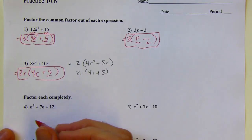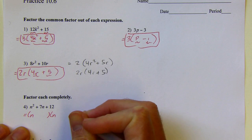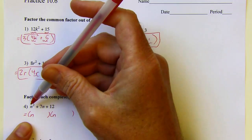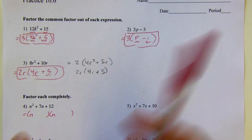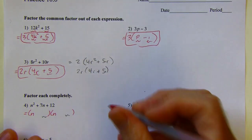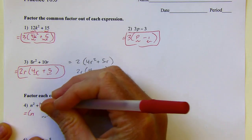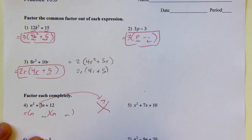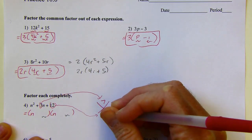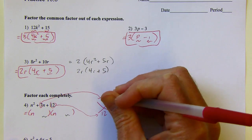So this first one — if it's factorable, I'm thinking about FOIL. I know it has to be n times n for my firsts to get n squared. Then the question is what goes in the back of both of these. I'm going to do this with a diamond problem. I'll take this coefficient and put it on top, and the 12 goes on the bottom. If you have a different method that's working for you, that's totally fine — this is one of many ways.